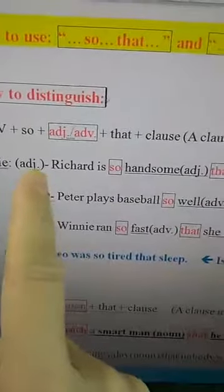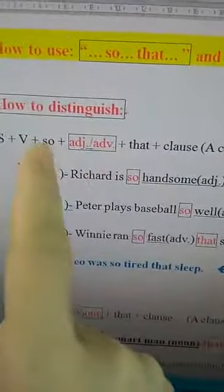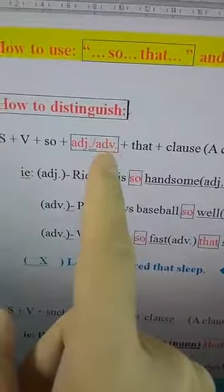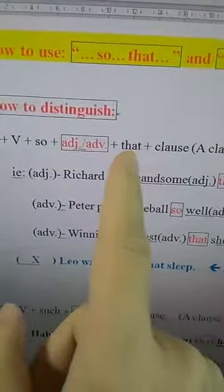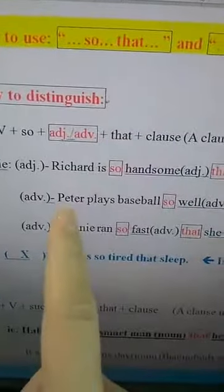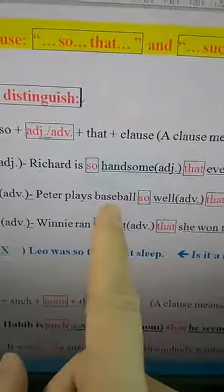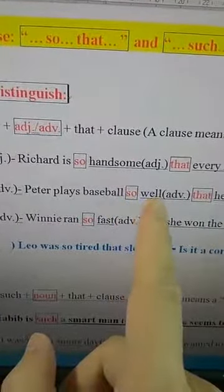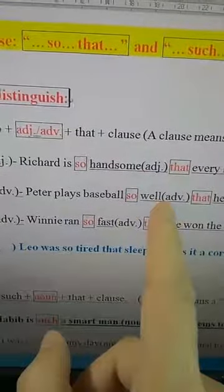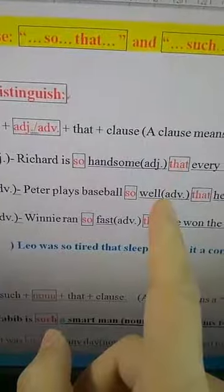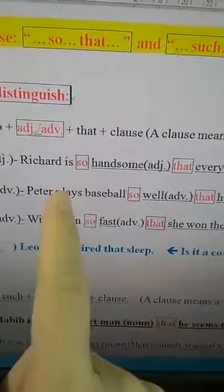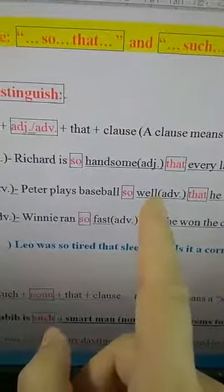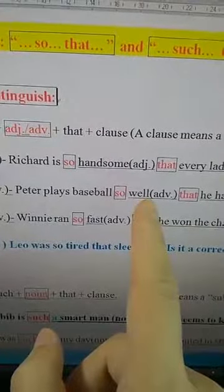This example is for adjectives. 'So' can also follow with one adverb. Here is an example: 'Peter plays baseball so well.' 'Well' is an adverb. Why do we use an adverb here? Because the adverb modifies the verb. So we use an adverb here.